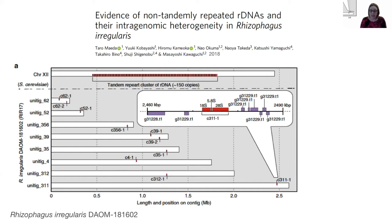That's why, even within a single spore, there can be many different variants of the ribosomal genes. We have no evidence yet that this is the case in all AM fungi, but given the high variability, it's fairly likely that's what we're going to be seeing.